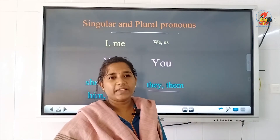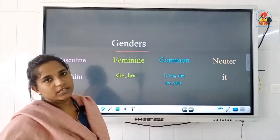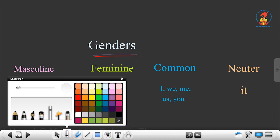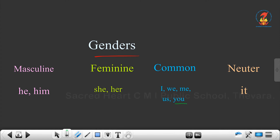Please learn this — it is on page number 47. The next topic is genders. Different pronouns are used for different genders. For masculine gender, the pronouns are he and him. For feminine gender, it is she and her. If it is common gender, we use I, we, me, us, you. When it is neuter gender — that means neither masculine nor feminine — we use 'it' as the pronoun.